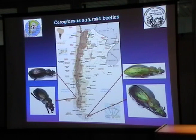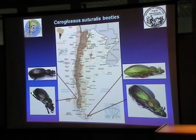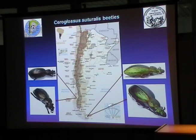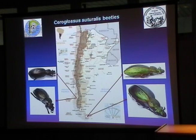Our next species is the Seroglosus suturalis beetle. There are two kinds: the green one, which is rather green with some orange lines and segments, and the other one which is more brown in color. This is a map of our country showing where these beetles can be found. We chose this species because they are easily found in our country, and both can be found in the south of Argentina and in the Patagonian region of Chile.